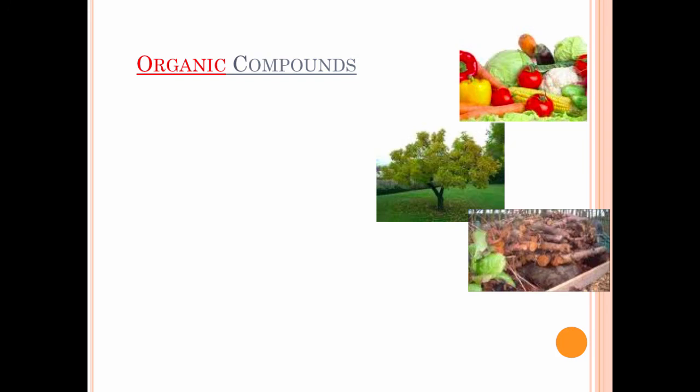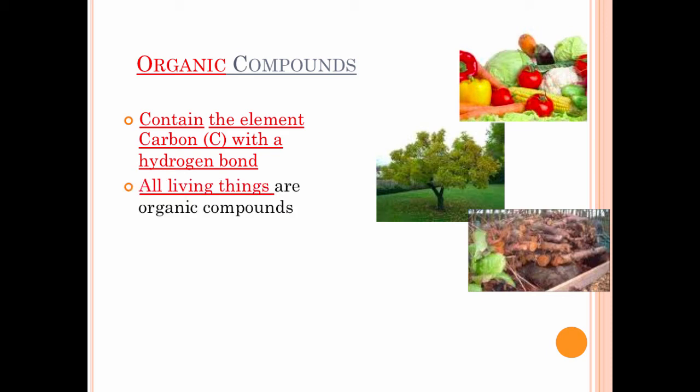So let's talk about organic compounds. Now in today's society, when we hear the word organic, we think something completely different. We're like, oh, it doesn't have pesticides. It's good for you. It's healthy. Well, in science, organic means a little bit something different. Organic is any compound that contains the element carbon with a hydrogen bond. So this is so important. If you are looking at a chemical formula, and it has a carbon in it, which is a C, and it has a hydrogen in it, which is an H, is it organic? Yes, it's that simple. All living things are organic compounds. You are an organic compound. So do you have carbon and hydrogen in your body? You must if you are organic.